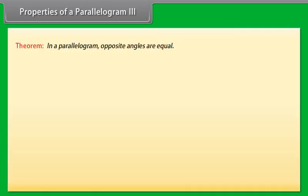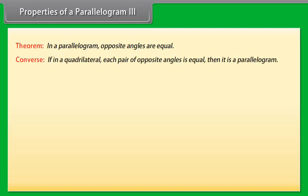Properties of a parallelogram - Property 3: Another property says that in a parallelogram, opposite angles are equal. The converse of this theorem says that if in a quadrilateral each pair of opposite angles is equal, then it is a parallelogram.